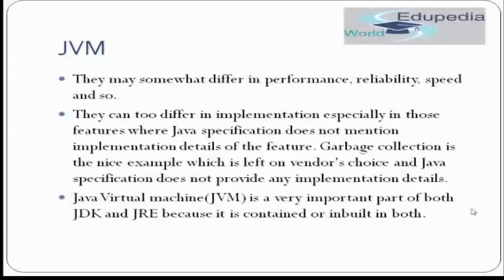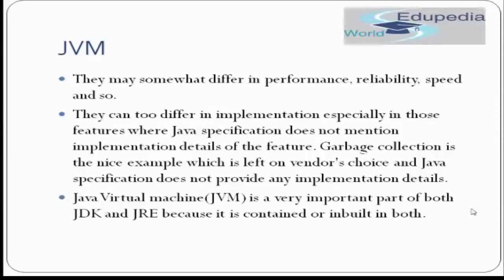There could be a different JVM for a Windows machine, a different JVM for Unix or Linux, and a different JVM for a Mac machine. All of them are very slightly different in performance, reliability, and speed, depending upon the vendor whose JVM we are using. This is because of code implementation differences, especially in features where the Java specification does not mention implementation details, such as garbage collection. In some JVMs, garbage collection is quite quick and effective, whereas in others it is a bit slow.